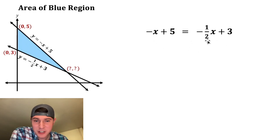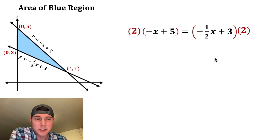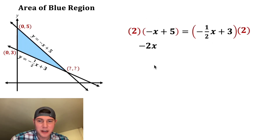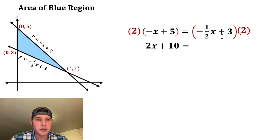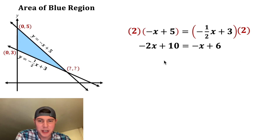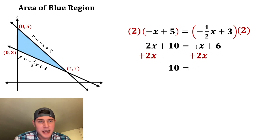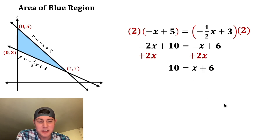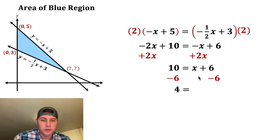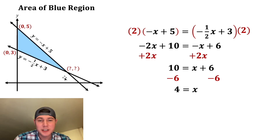Our goal is to solve for x. First, I don't like fractions, so I'm going to multiply both sides by 2. The 2 will distribute: 2 times negative x is negative 2x, and 2 times 5 is 10. On the other side, 2 times negative one-half is negative 1 times x, which is negative x, and 2 times 3 is 6. Now we move both x's to the same side — adding 2x to both sides, negative 2x and 2x cancel. Negative x plus 2x is 1x, and we bring down the 6. We subtract 6 from both sides: 10 minus 6 is 4, leaving us with just x equals 4.